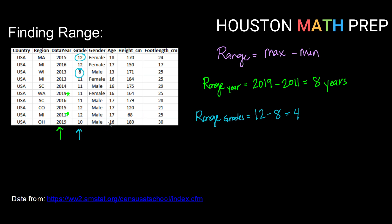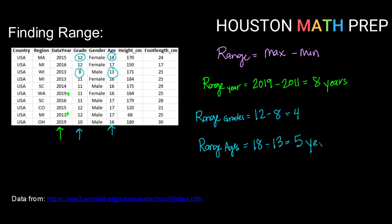All right, let's do one more — age. We can find the range for age. Finding our maximum age in this data set, that appears to be 18, minus our minimum value which appears to be 13. So 18 minus 13 would be 5. These are in years, so our range for ages in this data set is 5 years.